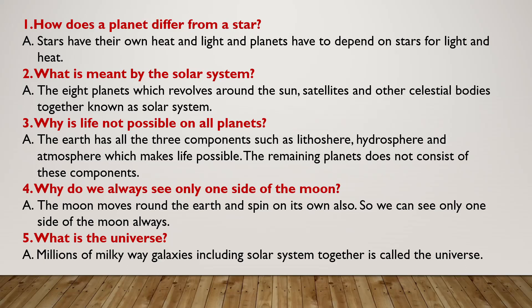The Earth has all three components: lithosphere, hydrosphere, and atmosphere, which makes life possible on Earth. The remaining planets do not consist of these components.